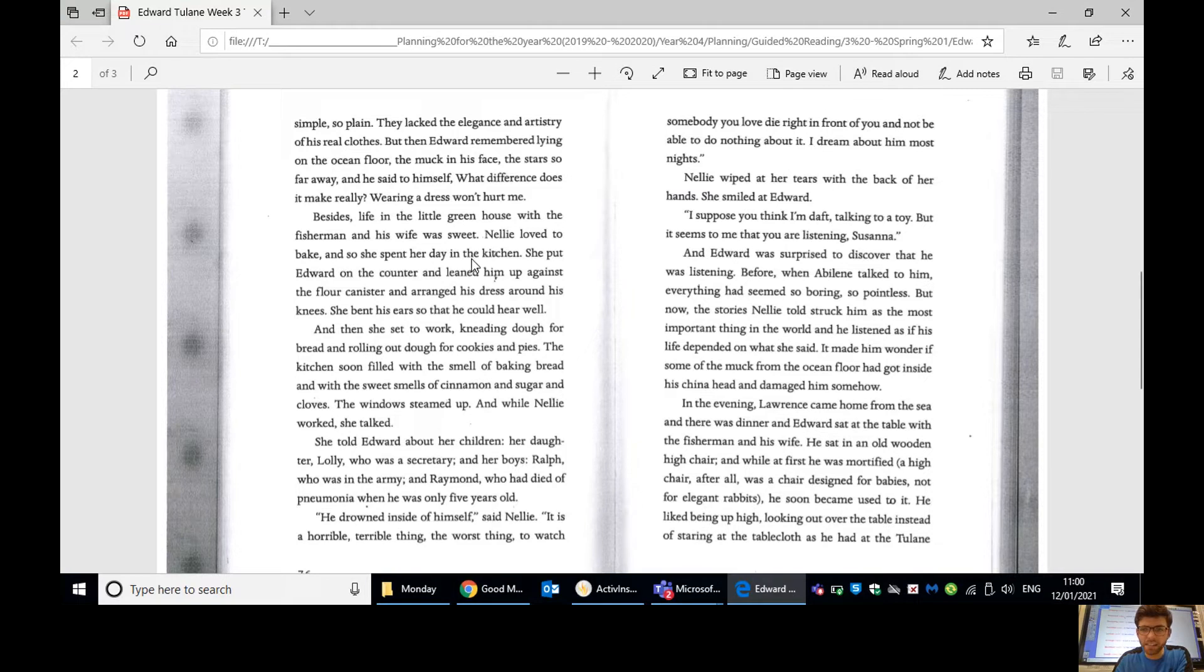Nellie loved to bake, and so she spent her day in the kitchen. She put Edward on the counter and leaned him up against the flower canister, and arranged his dress around his knees. She bent his ears so that he could hear well. And then she set to work, kneading dough for bread and rolling out dough for cookies and pies. The kitchen soon filled with the smell of baking bread and with the sweet smells of cinnamon and sugar and cloves. The windows steamed up, and while Nellie worked, she talked. She told Edward about her children, her daughter, Lolly, who was a secretary, and her boys, Ralph, who was in the army, and Raymond, who had died of pneumonia when he was only five years old.